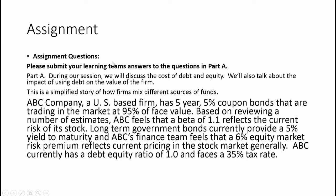Here's basically what I asked you. ABC Company, a U.S.-based firm, has 5-year, 5% coupon bonds that are trading in the market at 95%. Based on reviewing estimates, ABC feels its beta of 1.1 reflects the current risk of its stock, both the business risk and financing risk.